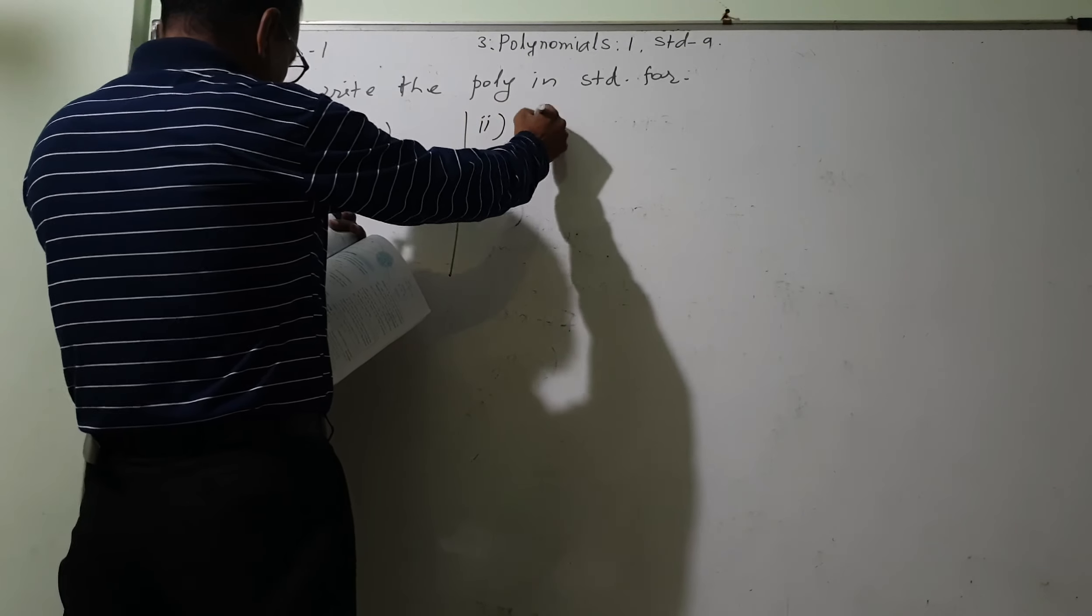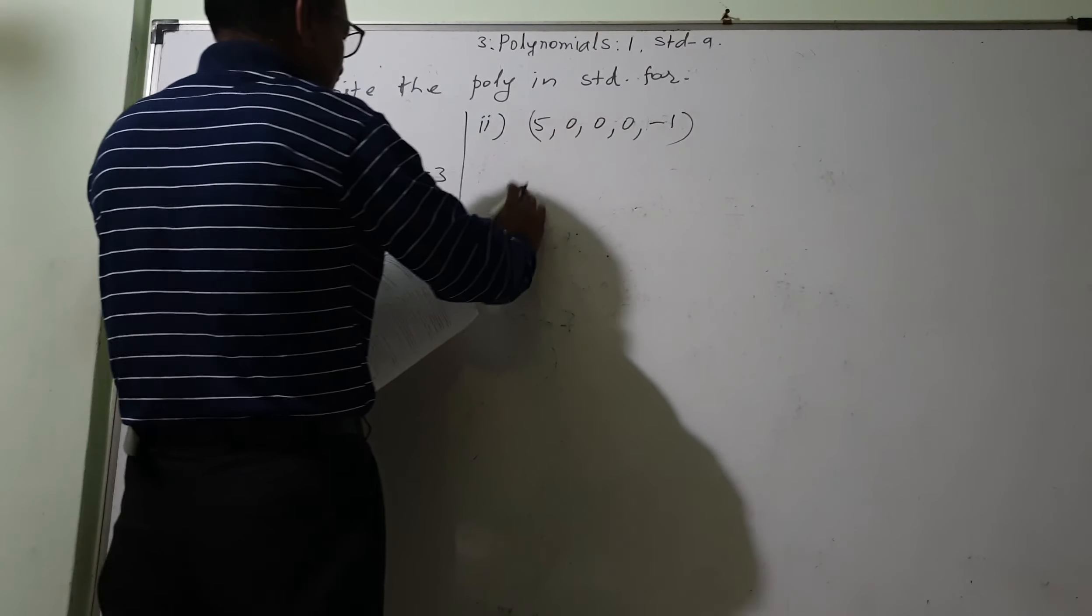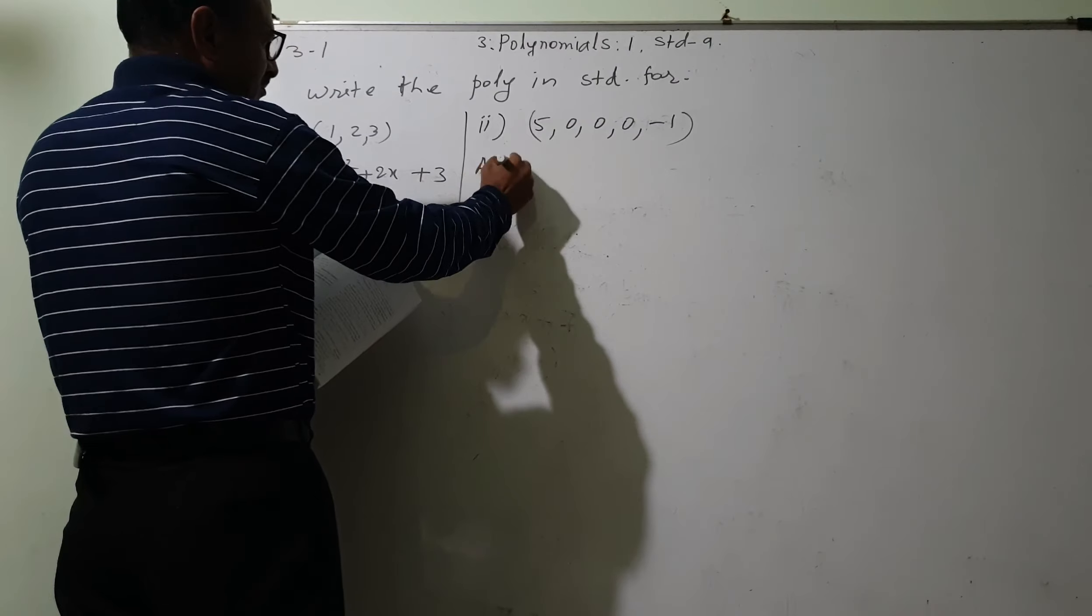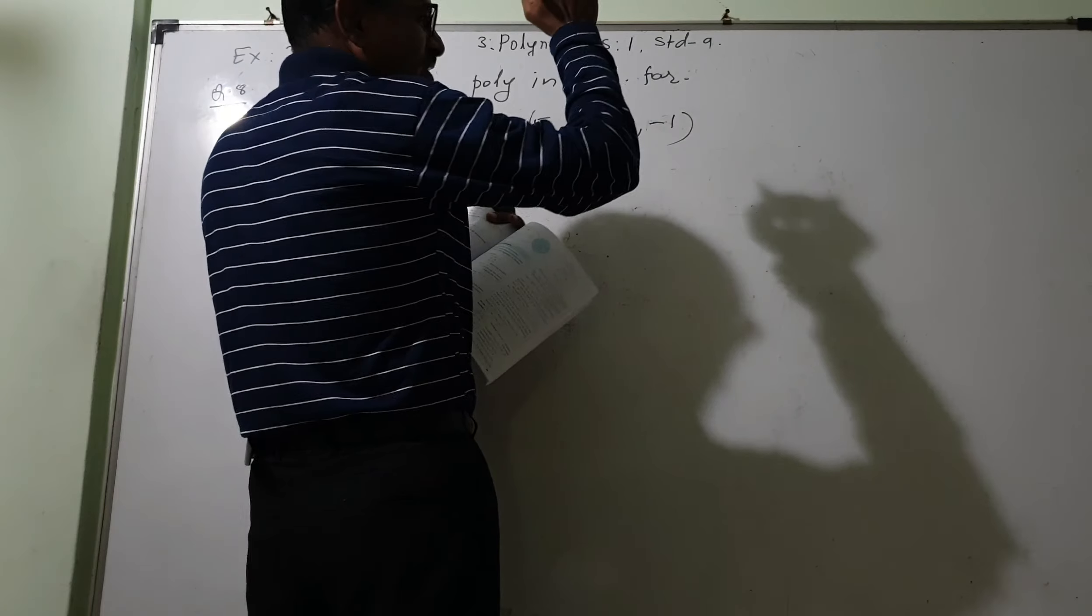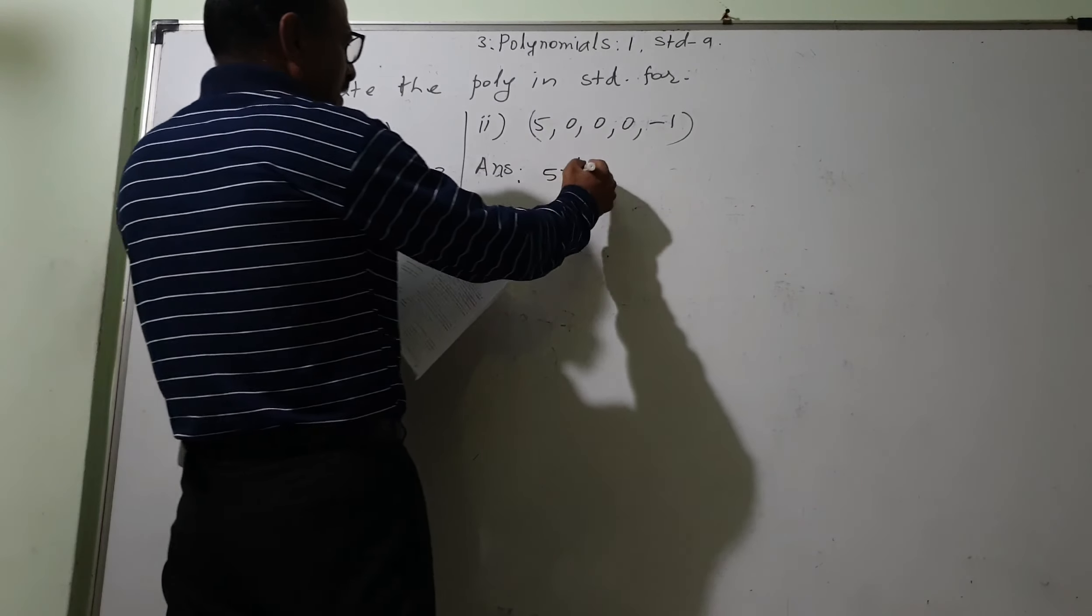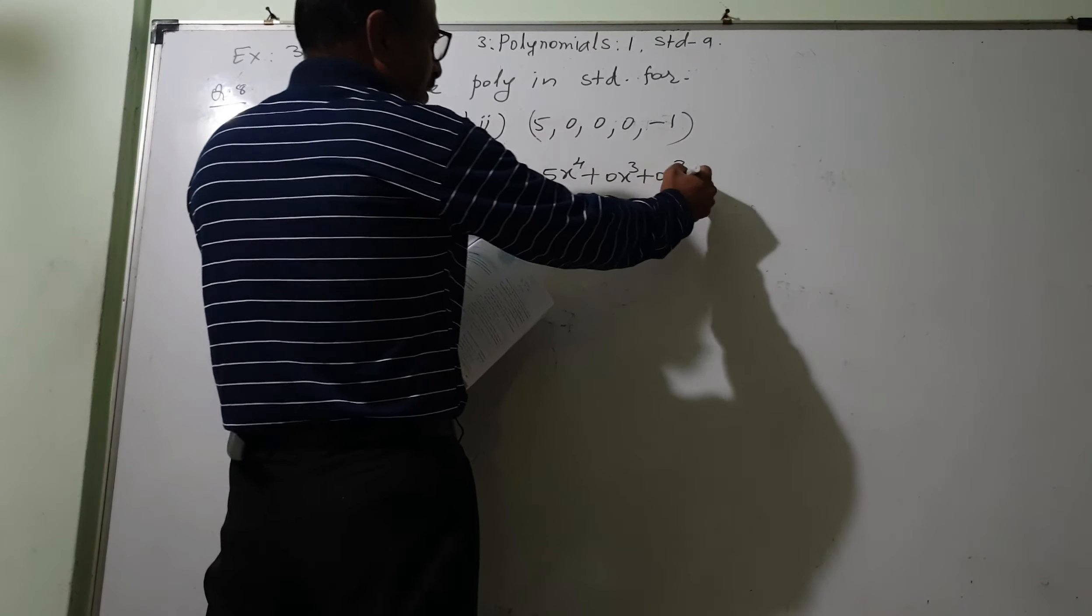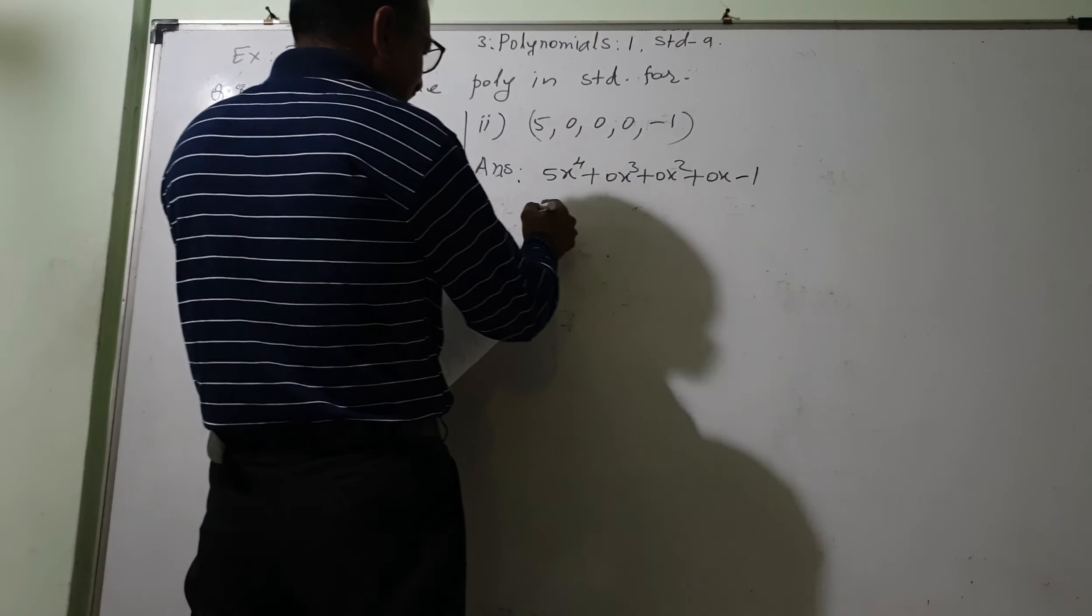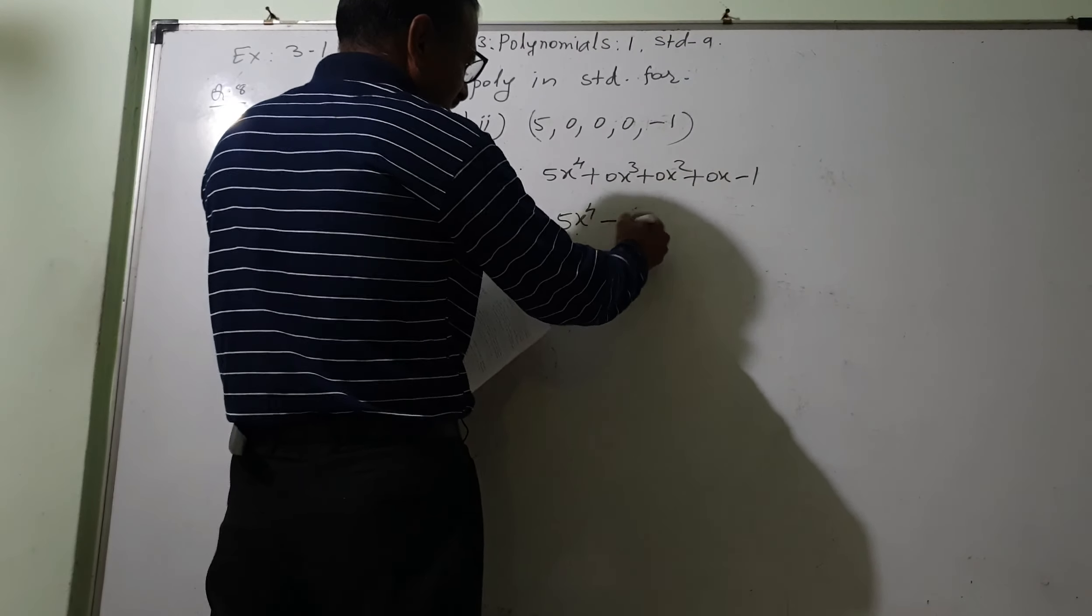Second one: 5, 0, 0, 0, 0, minus 1. This answer, for this how many you have: 1, 2, 3, 4, 5. So the power will be 4. So first will be x raise to 4 plus 0x raise to 3 plus 0x raise to 2 plus 0x raise to 1 and minus 1. And this is nothing but 5x raise to 4 minus 1. This way.